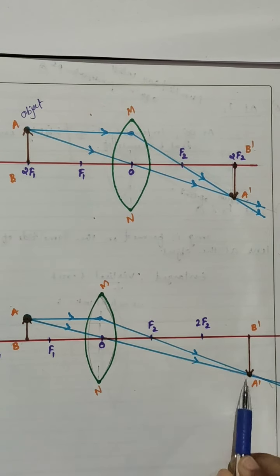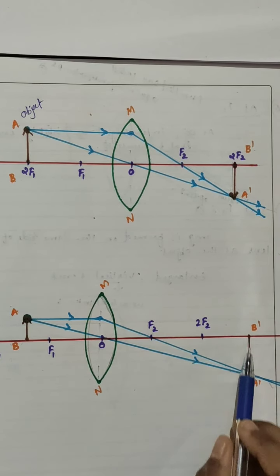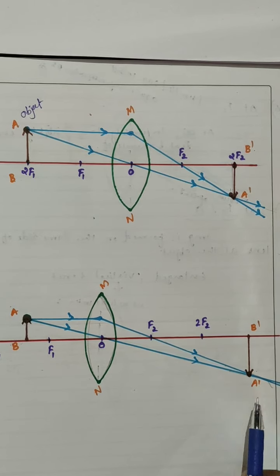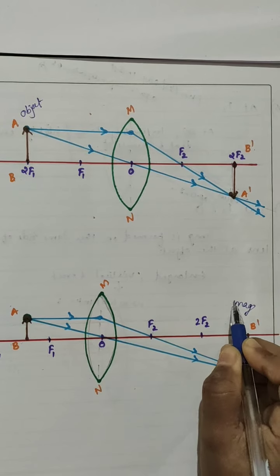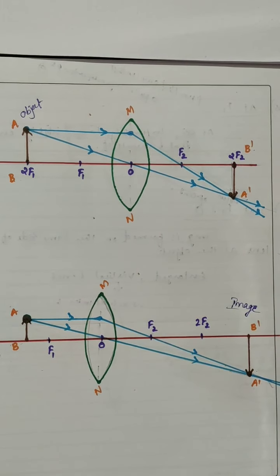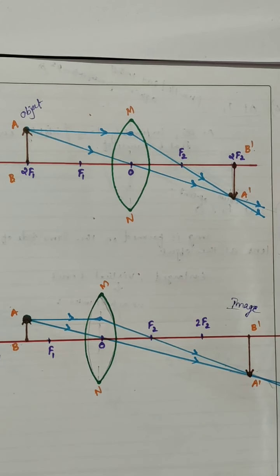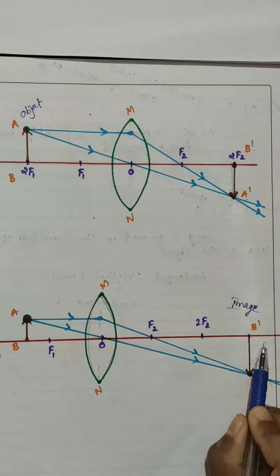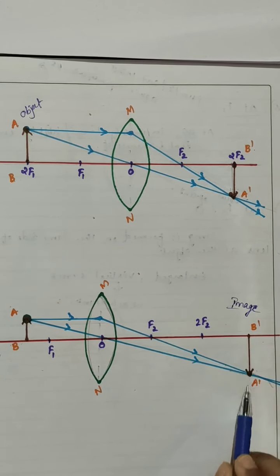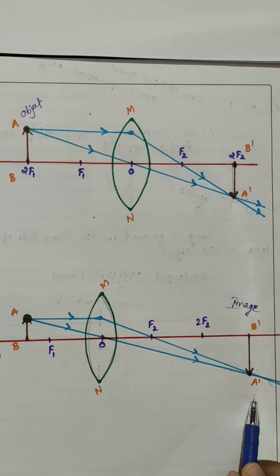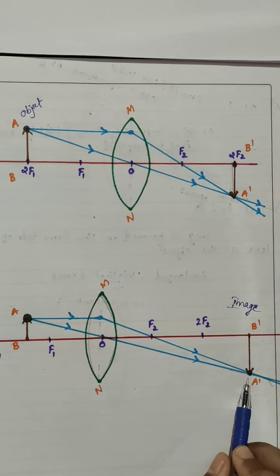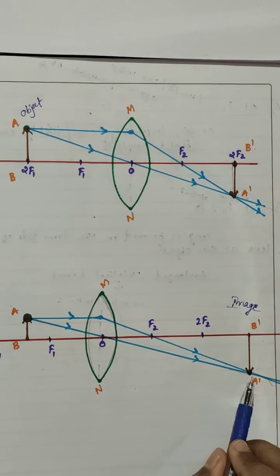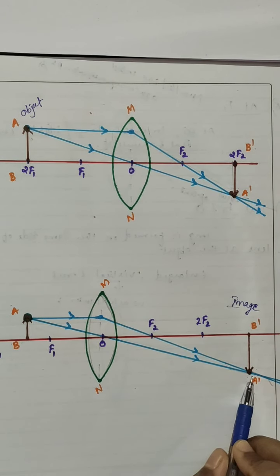The rest of the image — the bottom part — is joined to the principal axis. So A dash B dash is our image. The characteristics: image is formed beyond 2F2, it is an enlarged image, actual intersection of rays takes place so it is a real image, and it is an inverted image.